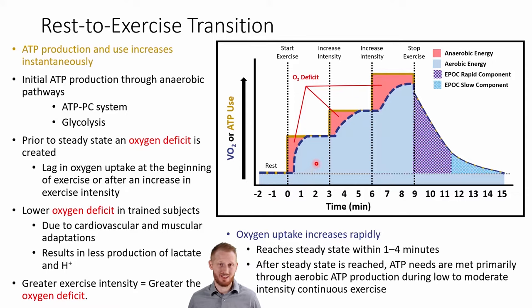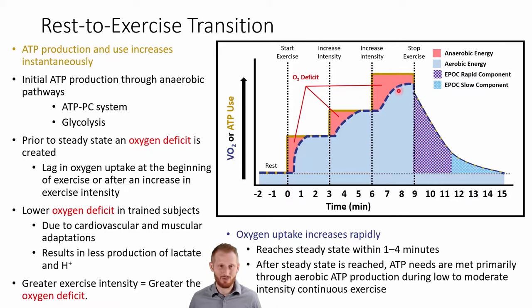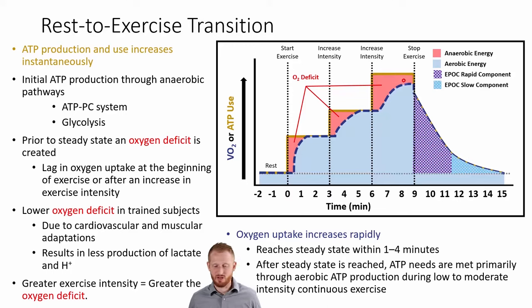The greater the exercise intensity, the greater the oxygen deficit is going to be, because the longer the lag time for aerobic metabolism to get where it needs to be. We see a small oxygen deficit with the first fairly low-intensity exercise, and a little larger one at moderate intensity. If we get too intense, aerobic metabolism won't be able to fully meet the needs — the oxygen deficit doesn't go away because we never become 100% aerobic at those levels. This continues up until your VO2 max.